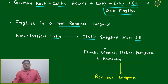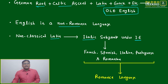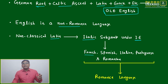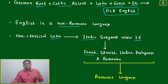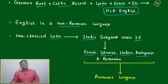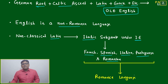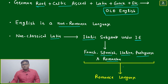This Italic subgroup under the Indo-European language family diversified into different tonalities and different sets of vocabulary, giving rise to French, Spanish, Italian, Portuguese, and Romanian. These five languages are called the Romance languages.